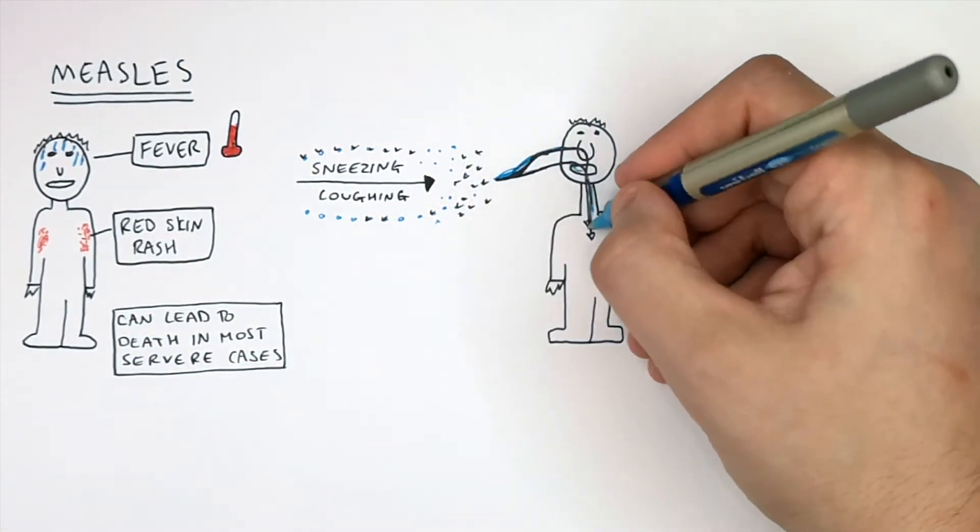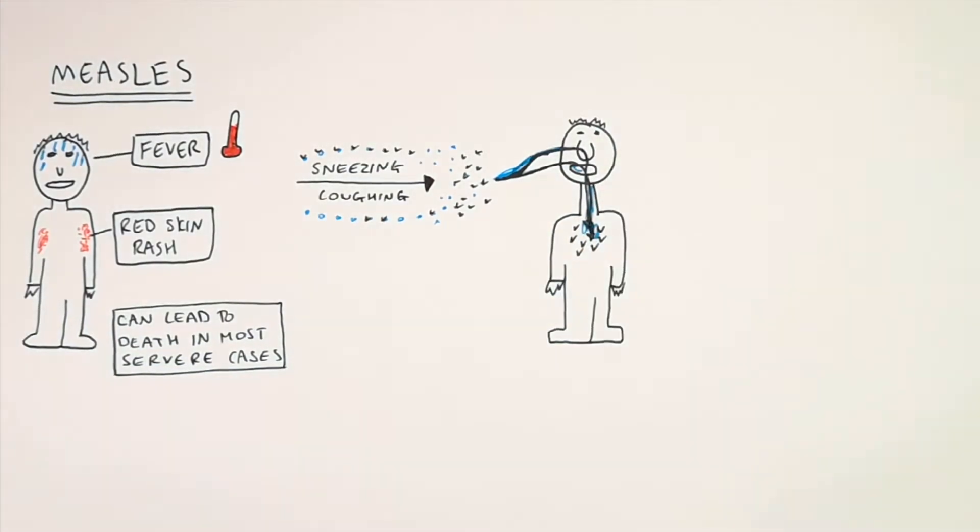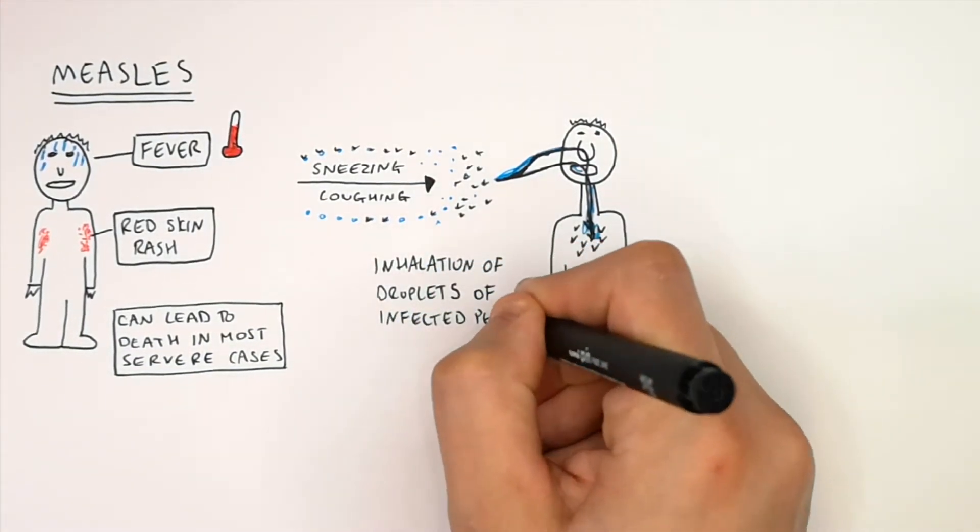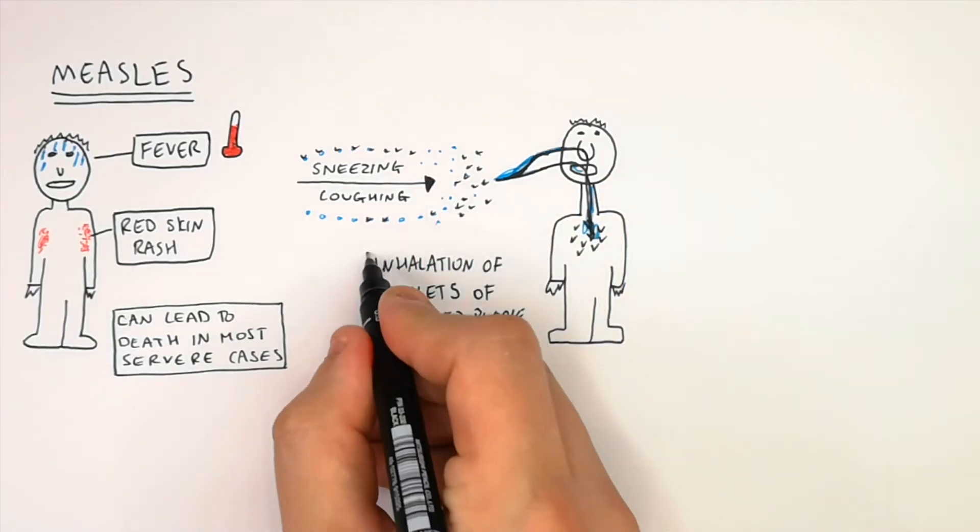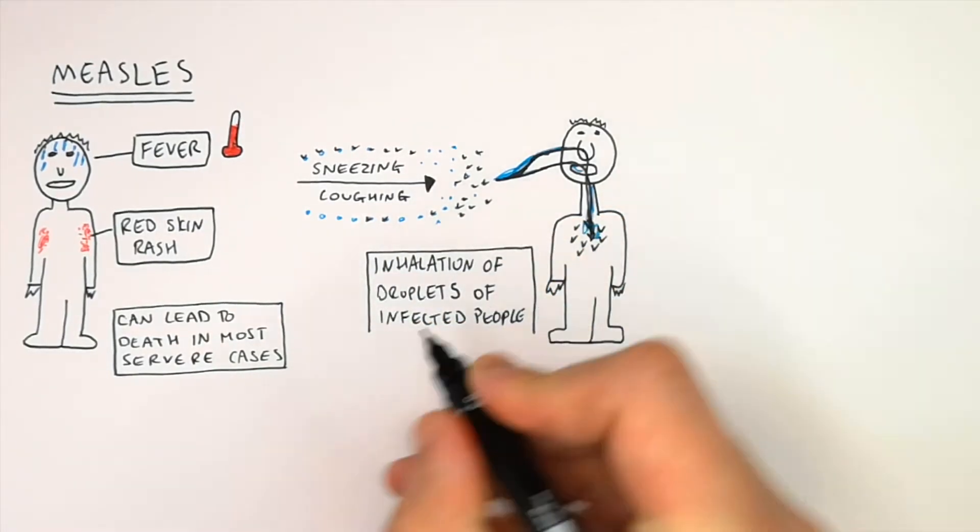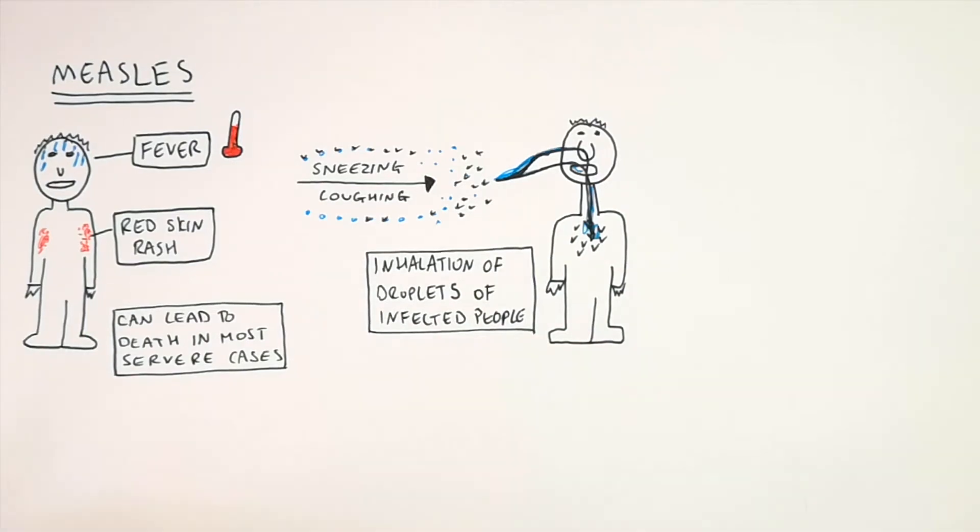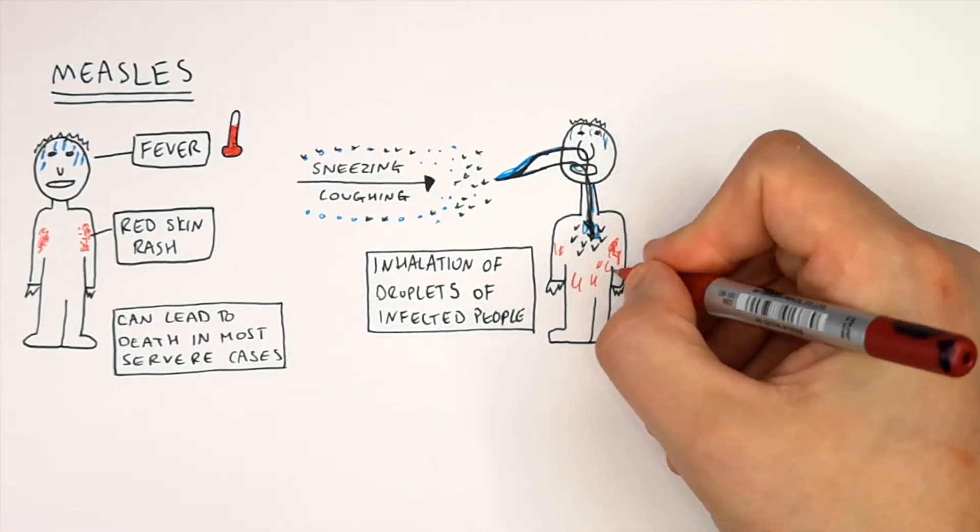The mucus is a vector. So if the person inhales the droplets of the infected people, they're then going to become infected and be a host of the virus which causes measles. They will then have a red skin rash and a high fever.